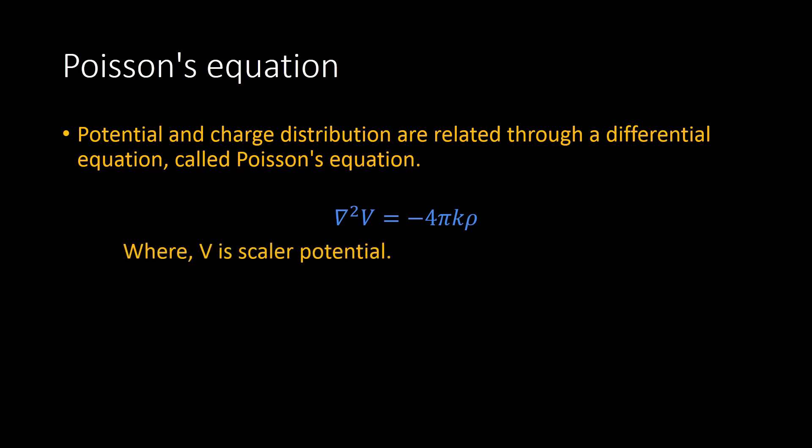Where V is a scalar potential, rho is charge density, k is Coulomb's constant, and del square is equal to partial derivative with respect to x plus partial derivative with respect to y plus partial derivative with respect to z.